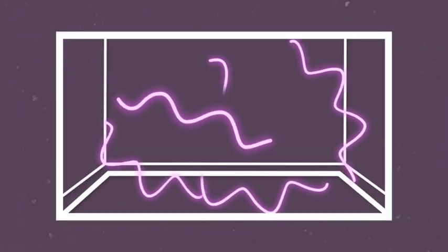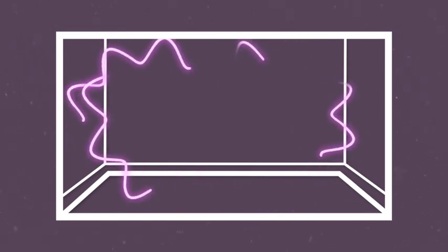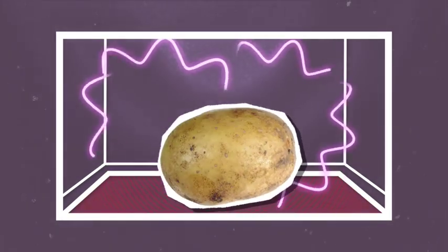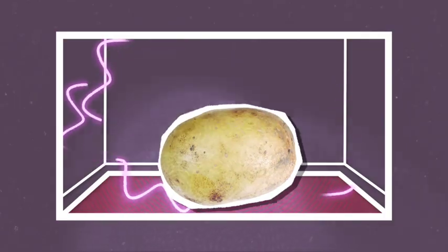A flatbed microwave, however, doesn't move the food at all. Instead, the microwave energy is rotated and enters the cavity from underneath the food. As a flatbed microwave doesn't have a turntable, it means there is much more cooking space for larger dishes.